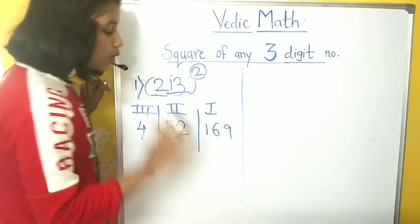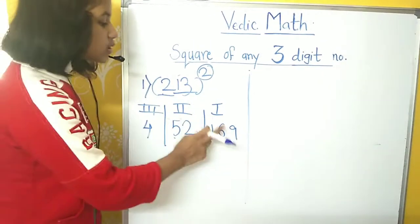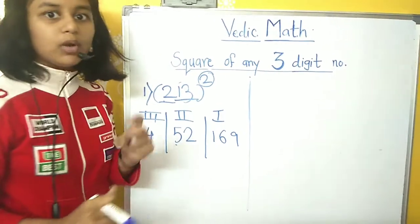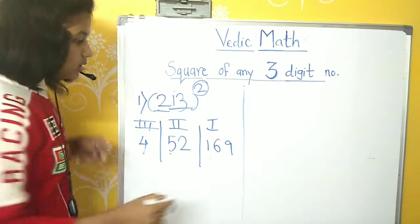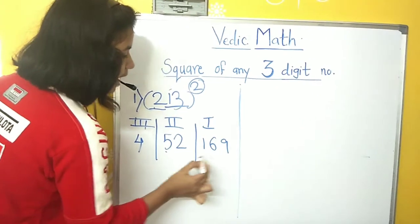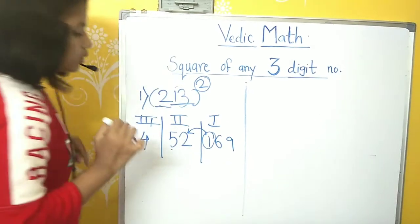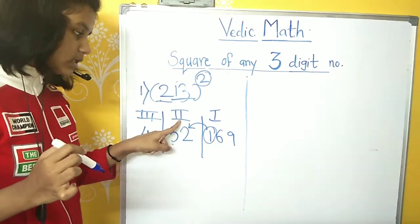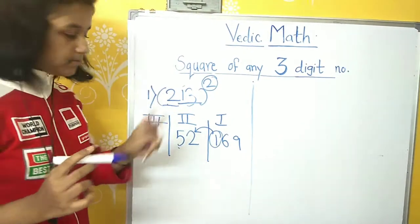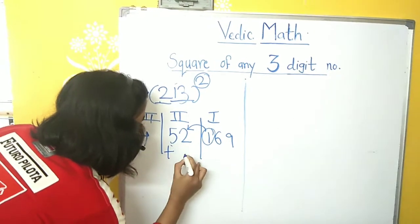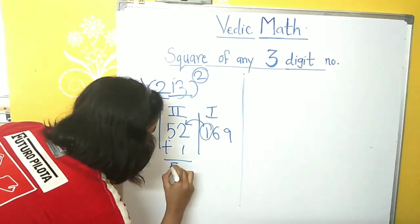Now, the rule is, in the first or the second step, there should be only two-digit number. So, here, we have three digits. So, we will carry forward the one present over here to the units place of the number in the second step. So, now let's add it off, which will be 53.